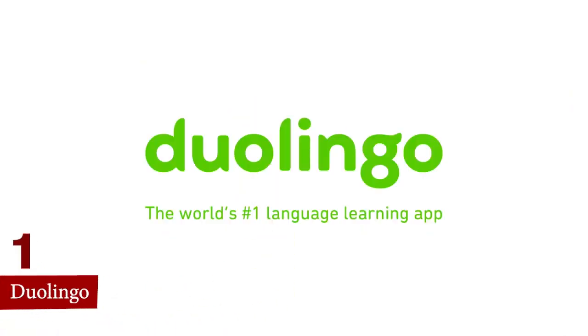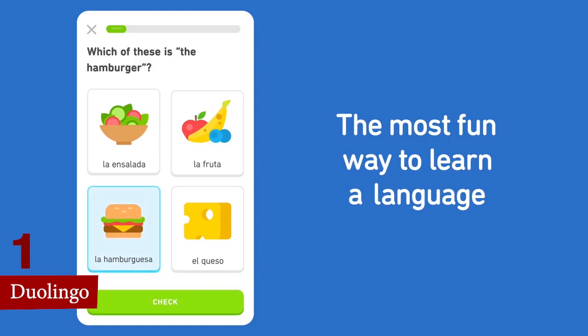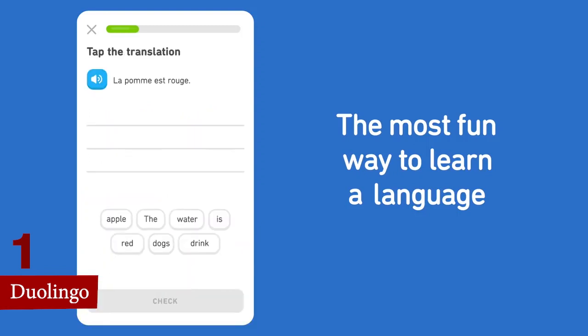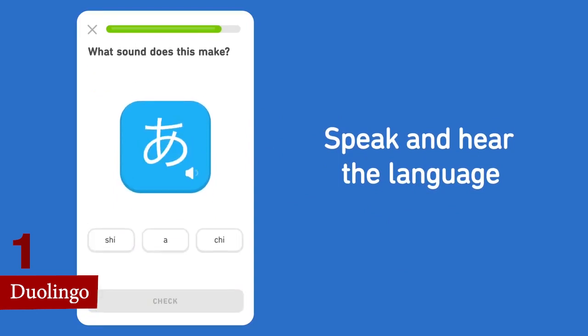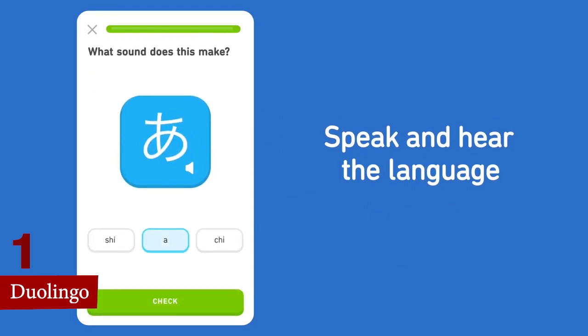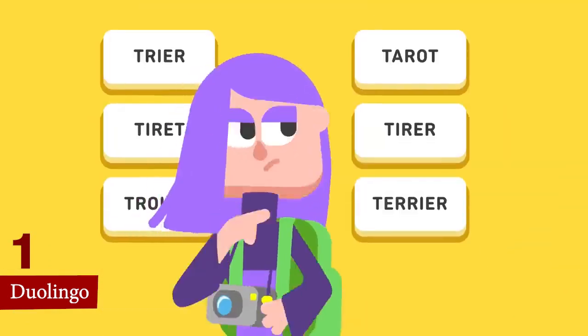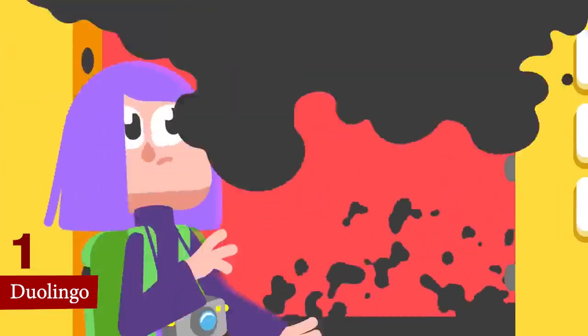Number 1, Duolingo. Duolingo is a free language learning platform that offers courses in over 40 languages. The app is designed to be fun and game-like, using gamification, adaptive learning, and spaced repetition to make learning a new language engaging and effective.